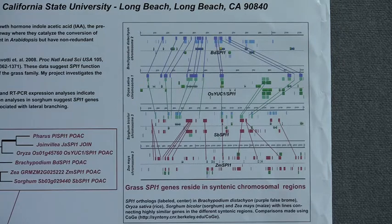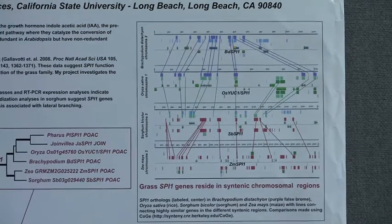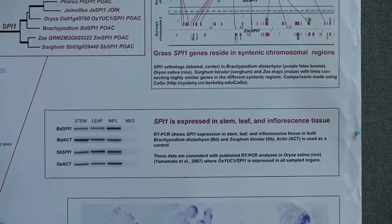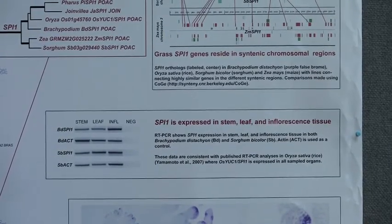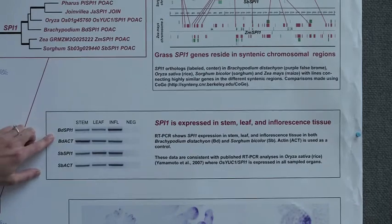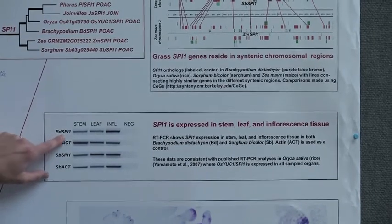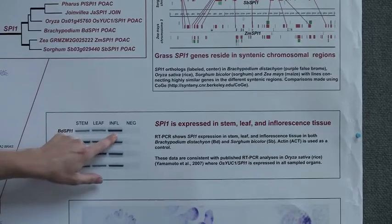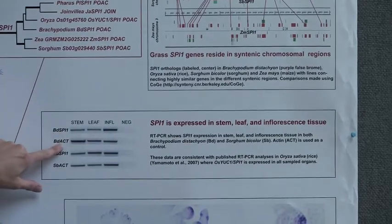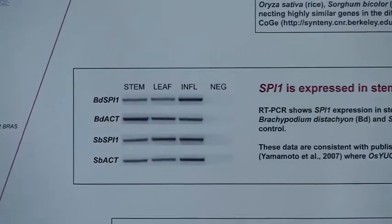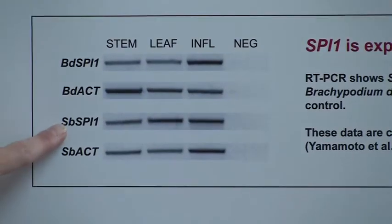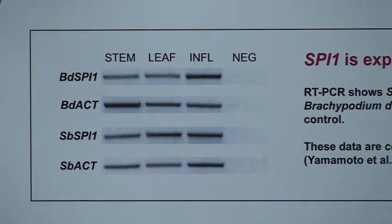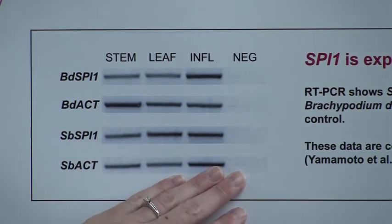The next thing I did for my project is do some RT-PCR expression analysis. I was looking to see where SPI1 is expressed in different plant tissues. What you're looking at here is the Brachypodium SPI1 gene, and we see that it's expressed in stem, leaf, and in inflorescence. I've used actin here as a control, which is ubiquitously expressed. I also have RT data for sorghum — the sorghum SPI1 gene is expressed in stem, leaf, and in inflorescence, and again actin is used as a control.